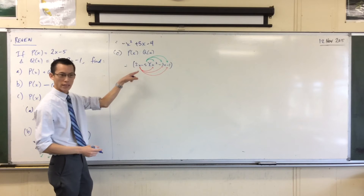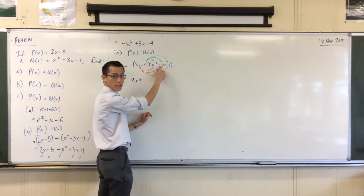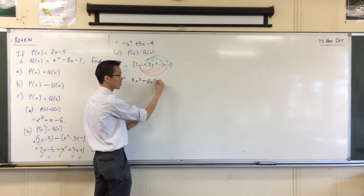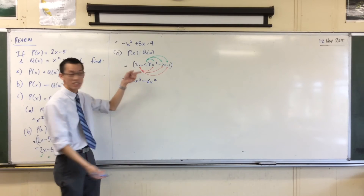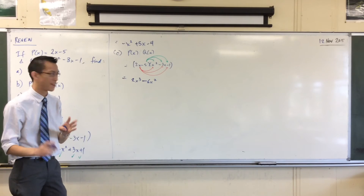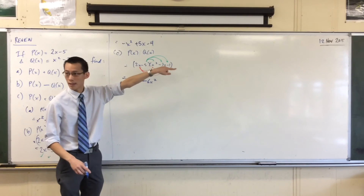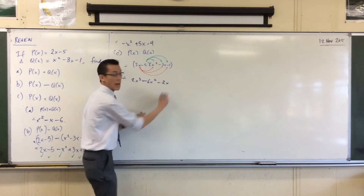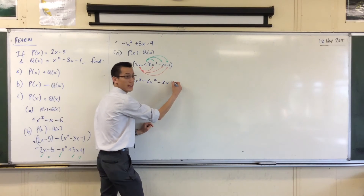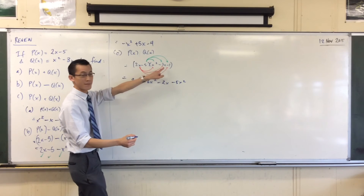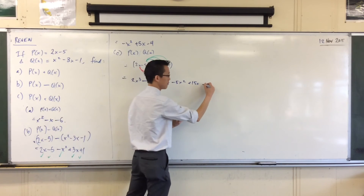I'll do the 2X first. 2X times X squared is 2X cubed; 2X times minus 3X is minus 6X squared; and 2X times minus 1 is minus 2X. I still draw the arrows — it helps me make sure I don't muck up any of my things. My powers are climbing down, just like these powers are climbing down. Now the negative 5: negative 5 times X squared is negative 5X squared; negative 5 times negative 3X is plus 15X; and negative 5 times negative 1 is plus 5.